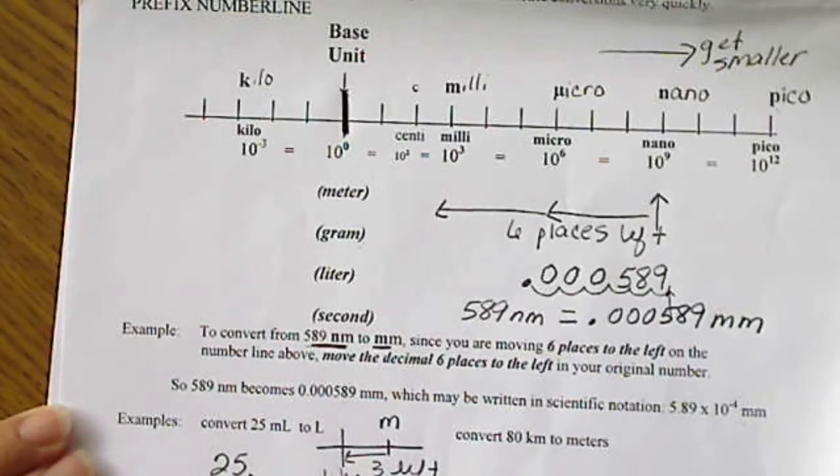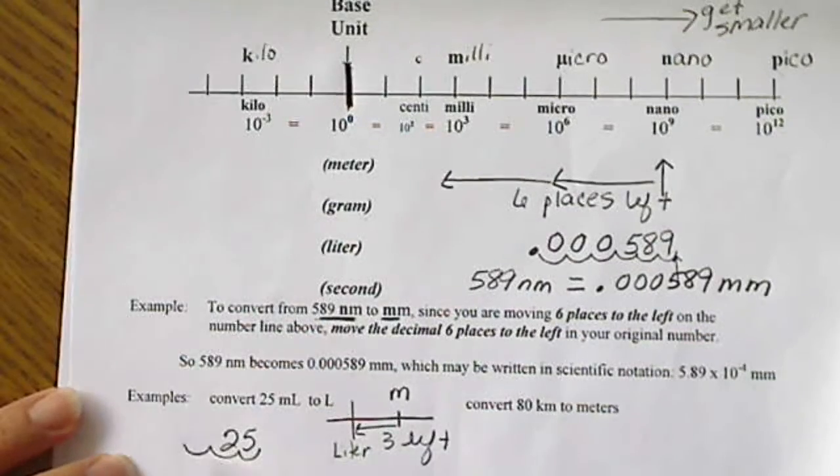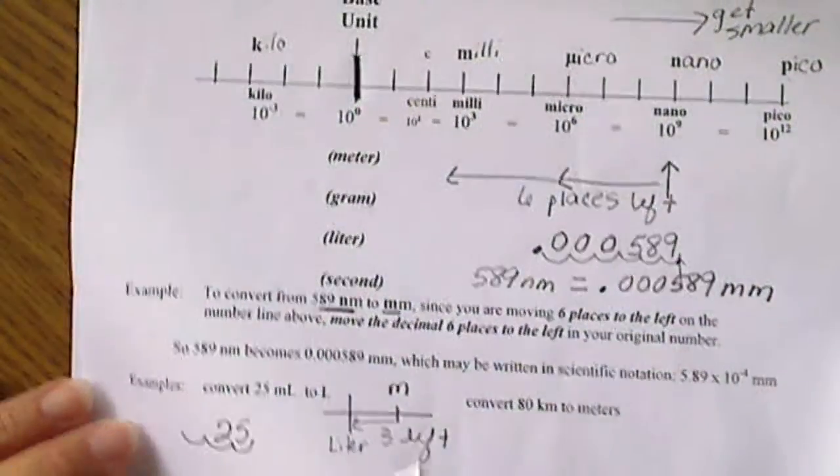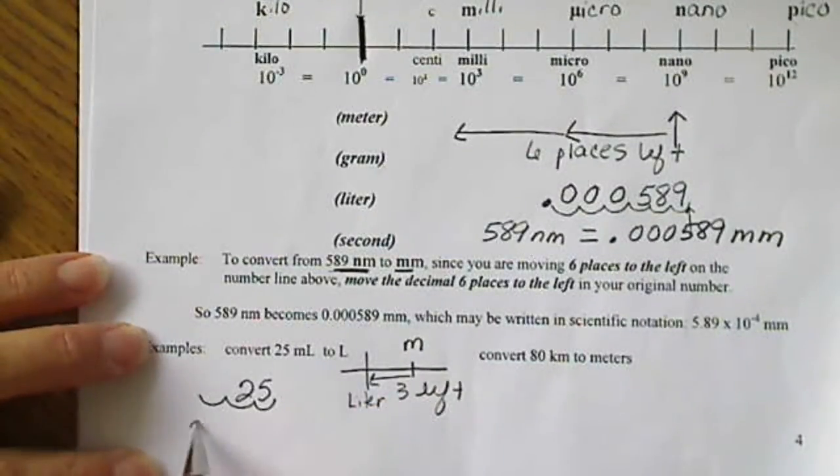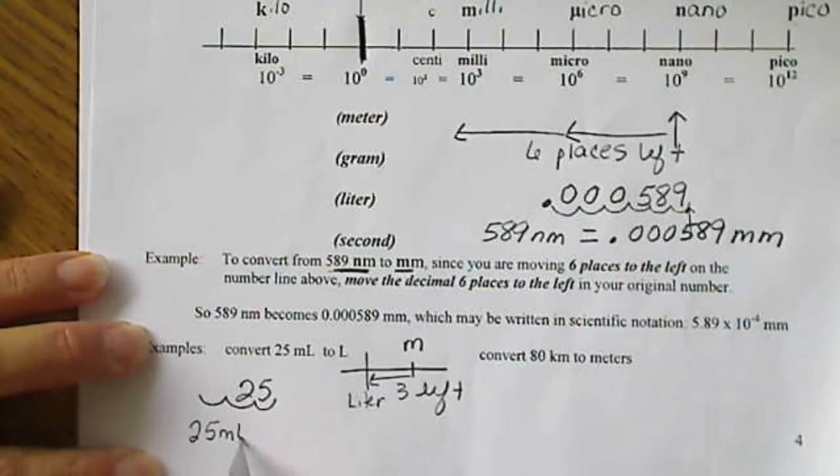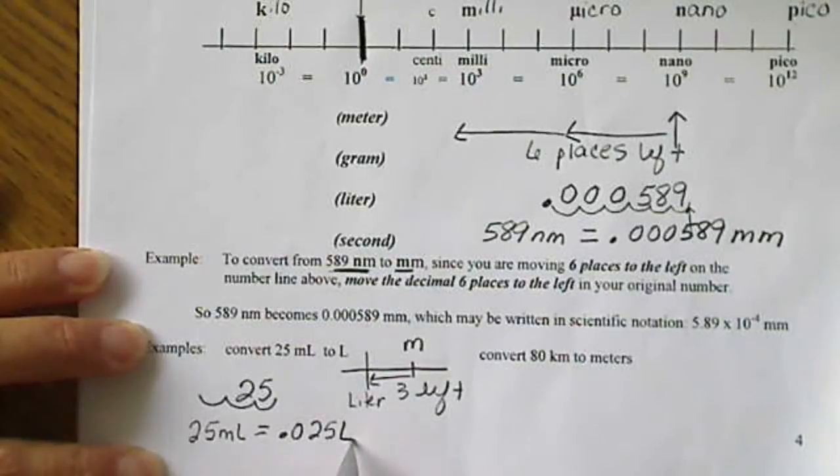So we will take this number 25, place the decimal where it is, and move the decimal three places to the left. And so 25 milliliters, which is about a little less than a teaspoon, is equal to 0.025 liters.